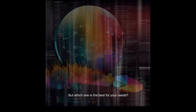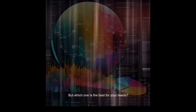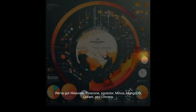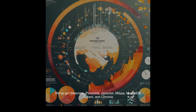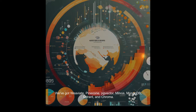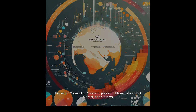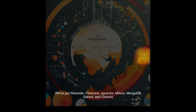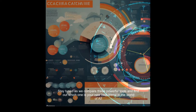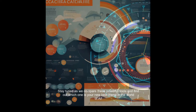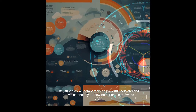But which one is the best for your needs? We've got Weaviate, Pinecone, Pgvector, Milvus, MongoDB, Qdrant, and Chroma. Stay tuned as we compare these powerful tools and find out which one is your new best friend in the world of AI.